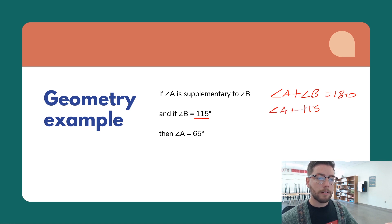Now we just have to solve. So we subtract 115, and we get angle A is equal to 65. And that is the transitive property or the law of syllogism.